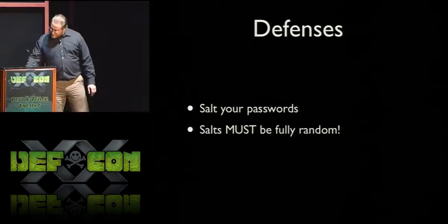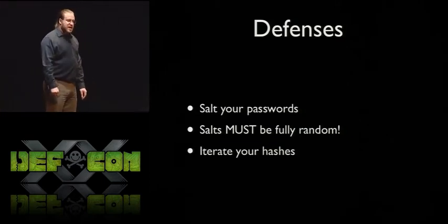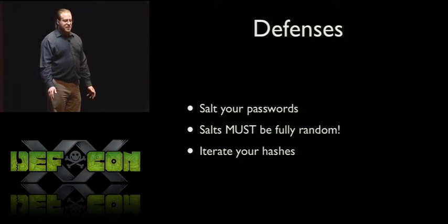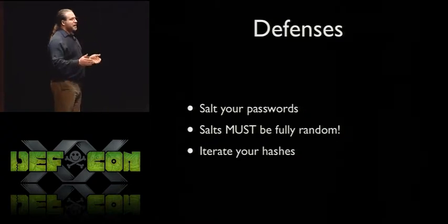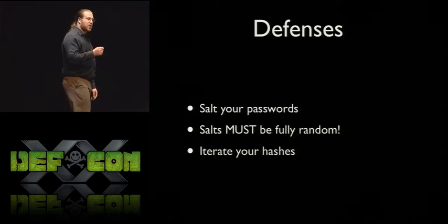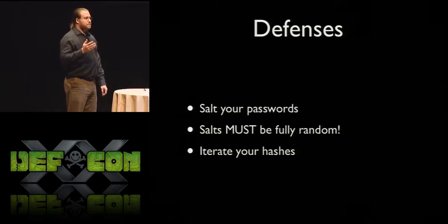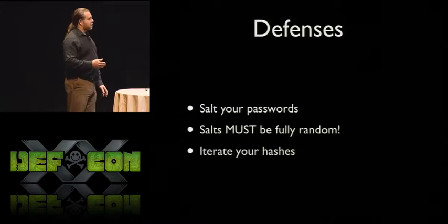And finally, iterate your hashes. Use something that does a lot of iterations — it slows the attacker down and really doesn't hurt the defender very much. Your users are not going to notice if you take a millisecond instead of a microsecond to check their password hash. The internet doesn't run that fast. As BlackBerry demonstrated, iterations have to be a reasonable number, and that number has to go up as processing power increases. Video cards have been tracking Moore's Law very closely in performance. So if you're not doubling your iteration count roughly every 18 months, the attackers are outrunning you in power.